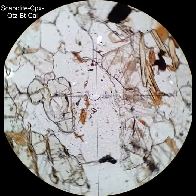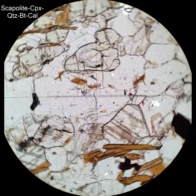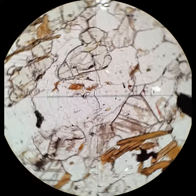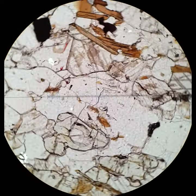This is scapolite in a different calcosilicate. There's high-relief clinopyroxene, there's calcite with some twins, there's some brown pleochroic biotite, and then in the center is colorless, low-relief scapolite.